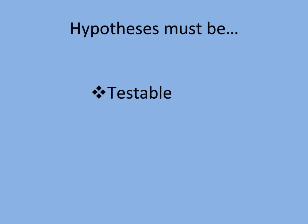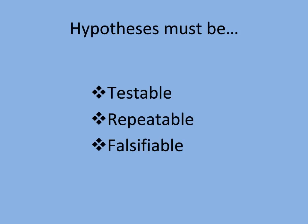A good hypothesis must be testable, meaning you can test it. We have to be more specific. A good hypothesis must be repeatable, meaning you need to be able to test the hypothesis many times, and other researchers must be able to test your hypothesis as well. A good hypothesis must also be falsifiable — this means you have to have the ability to prove your hypothesis to be false. Consider the hypothesis that aliens live on a planet a thousand light years from Earth. Can you gather evidence to show that these aliens do not exist? No, because we don't have the technology to do this, and the scientific method cannot test this because it is not falsifiable.